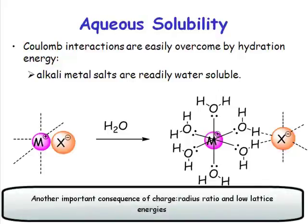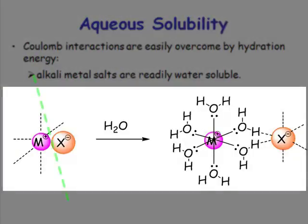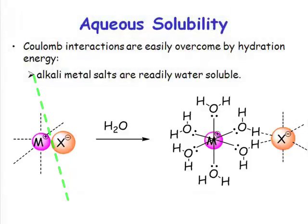It has another important consequence. Because the lattice energies are relatively low, what happens when you dissolve an ionic solid is you break that ionic lattice. You have to break up the ionic lattice in order to dissolve an ionic solid, and the weaker the ionic lattice, the easier it is going to be to break it up. So lithium, sodium, potassium salts are much more soluble than magnesium or calcium salts because of this lower charge-to-radius ratio — because the coulombic interactions are weaker, these species are going to be much more soluble.